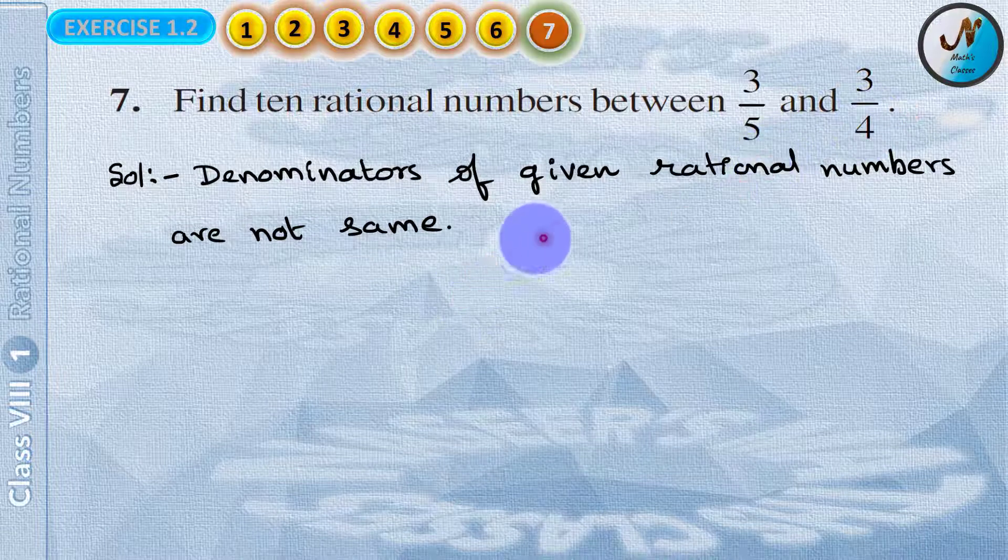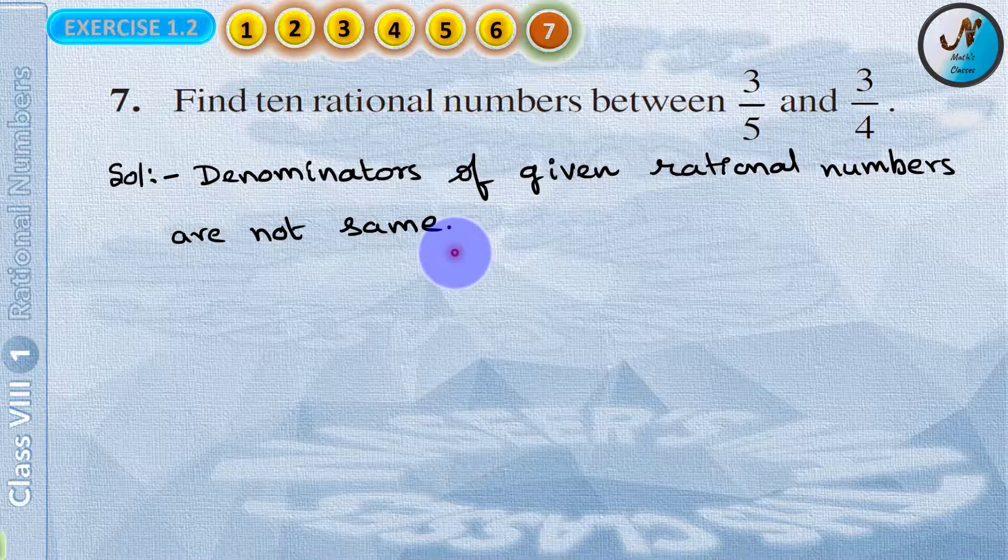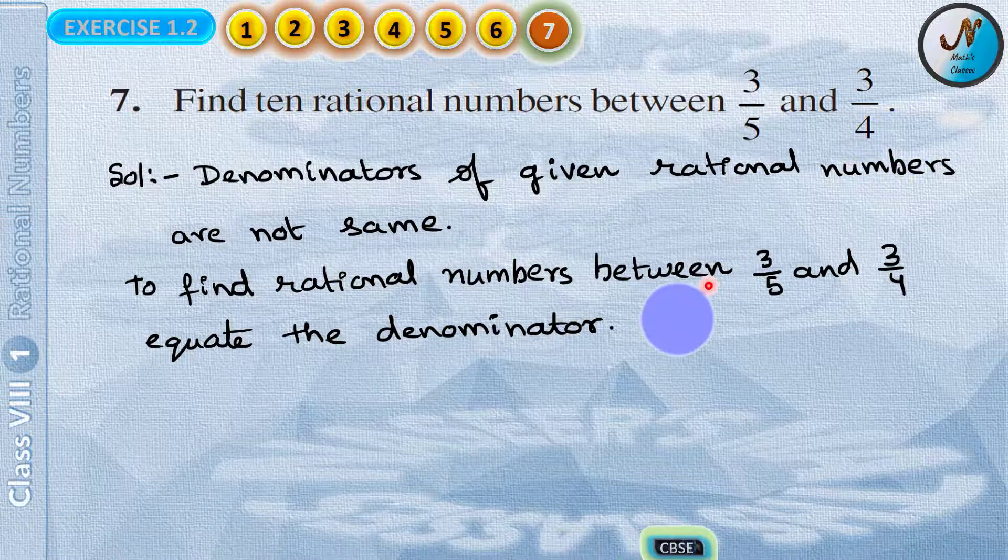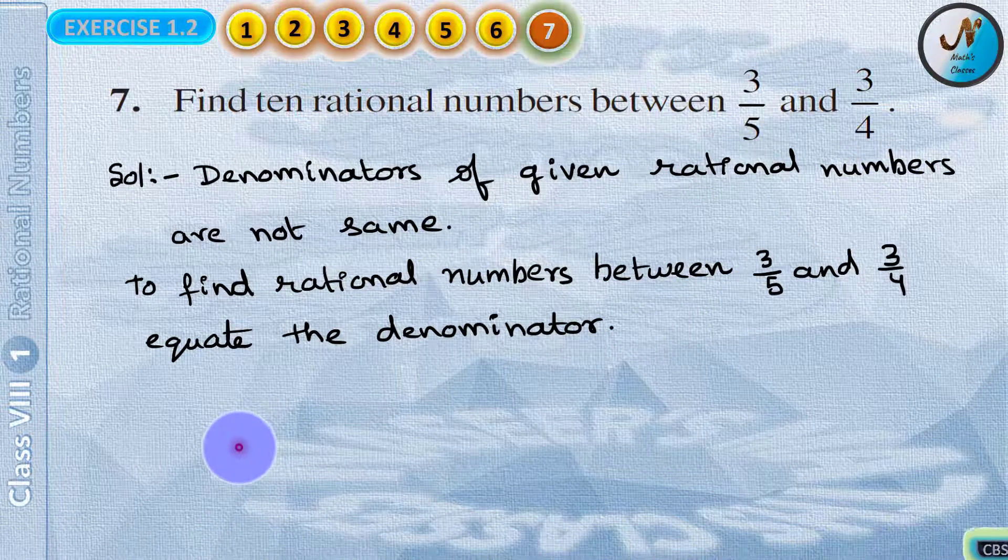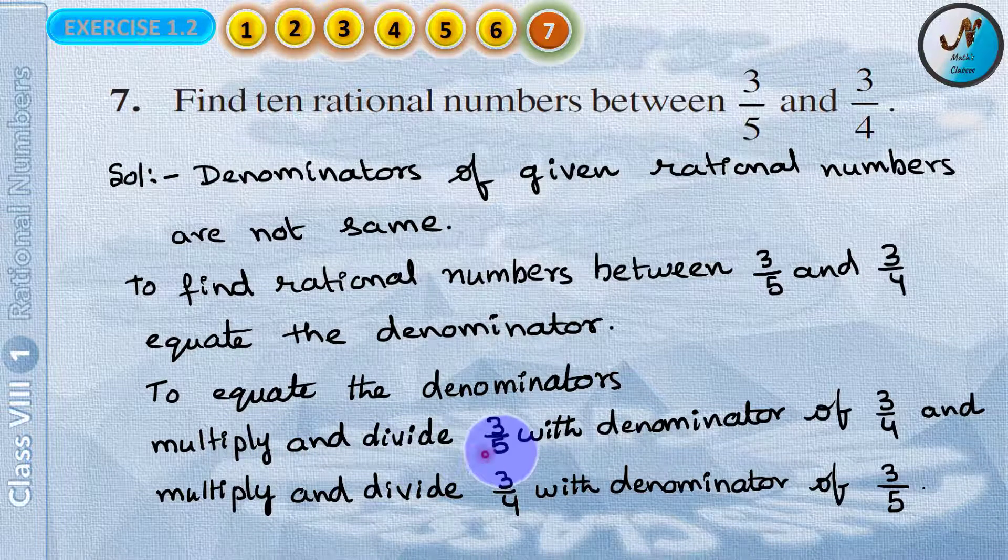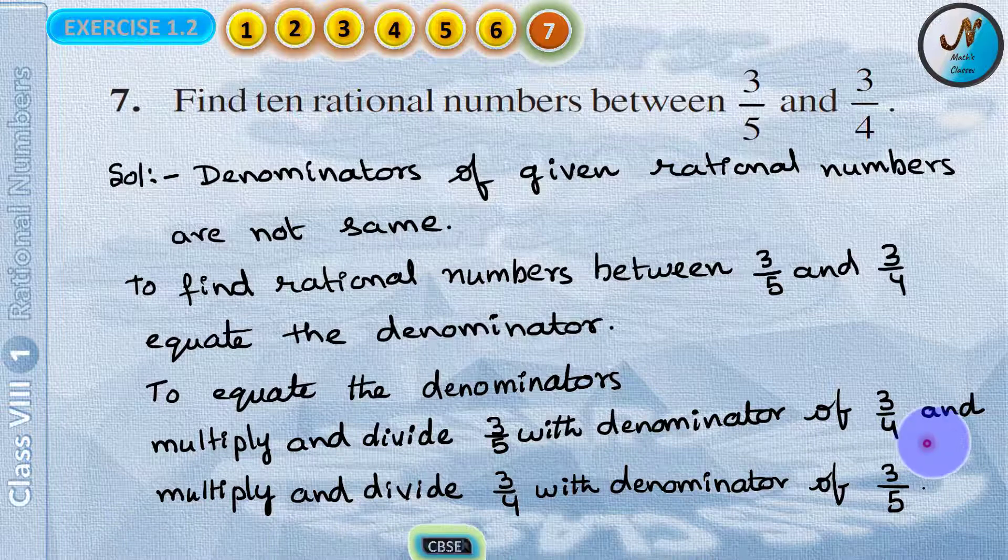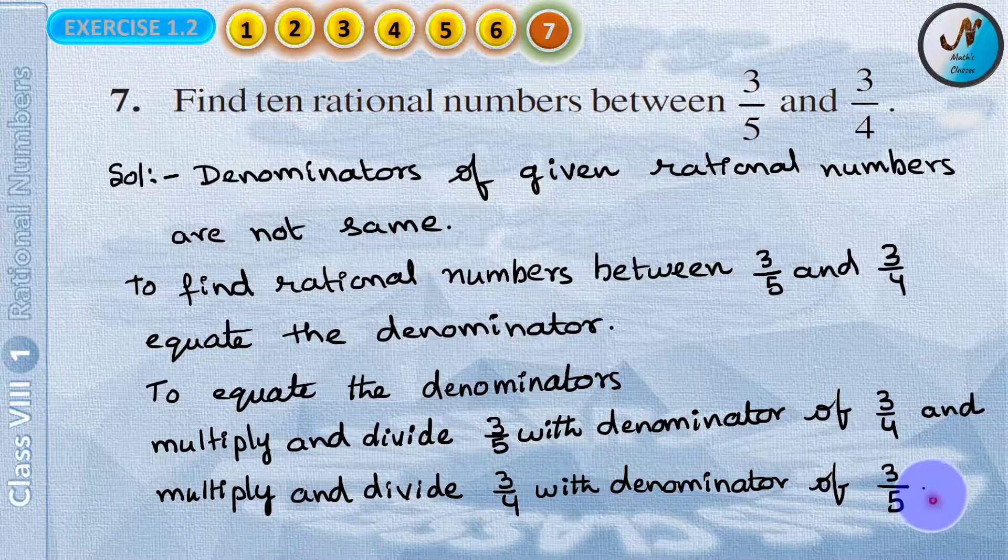So we have to find rational numbers between 3 by 5 and 3 by 4. We have to equal the denominators. To equal the denominators we have to multiply and divide 3 by 5 with the denominator of 3 by 4 and multiply and divide 3 by 4 with the denominator of 3 by 5.